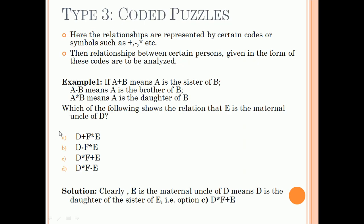Quickly moving on to the third type: coded puzzles. Here the relationships are represented by certain codes or symbols such as plus, minus, and so on. The relationship between certain persons given in the form of these codes are to be analyzed.